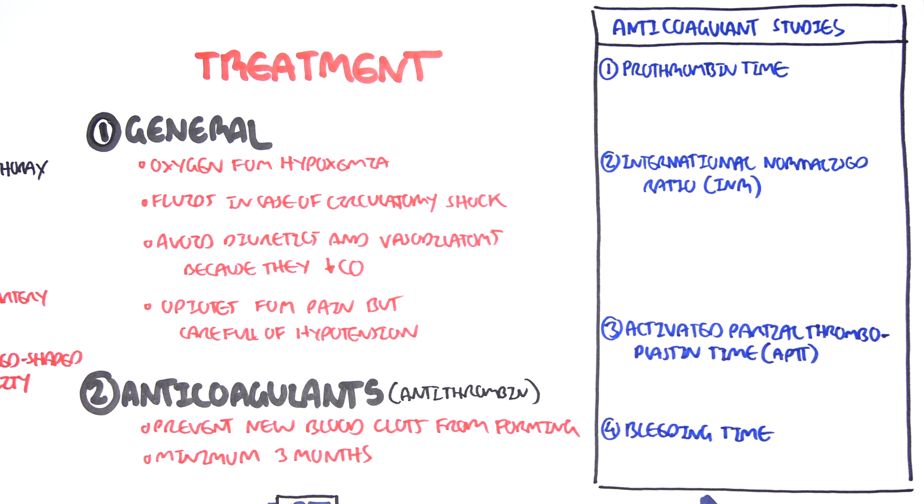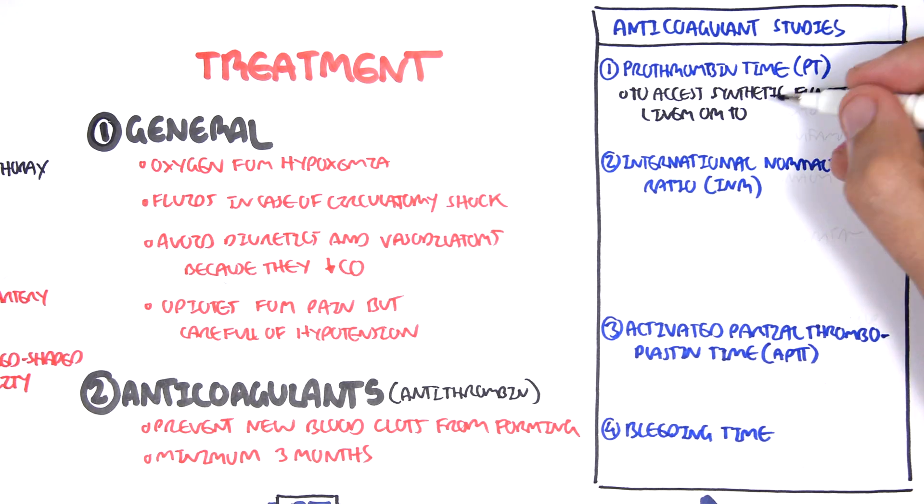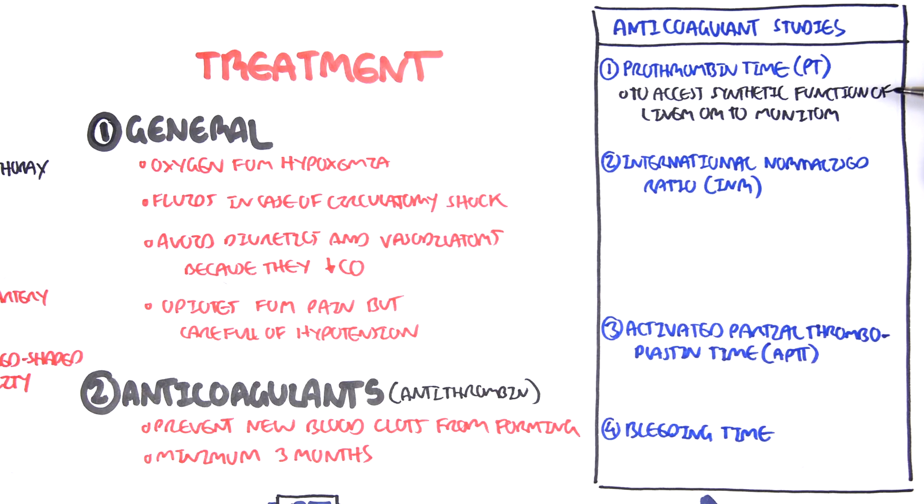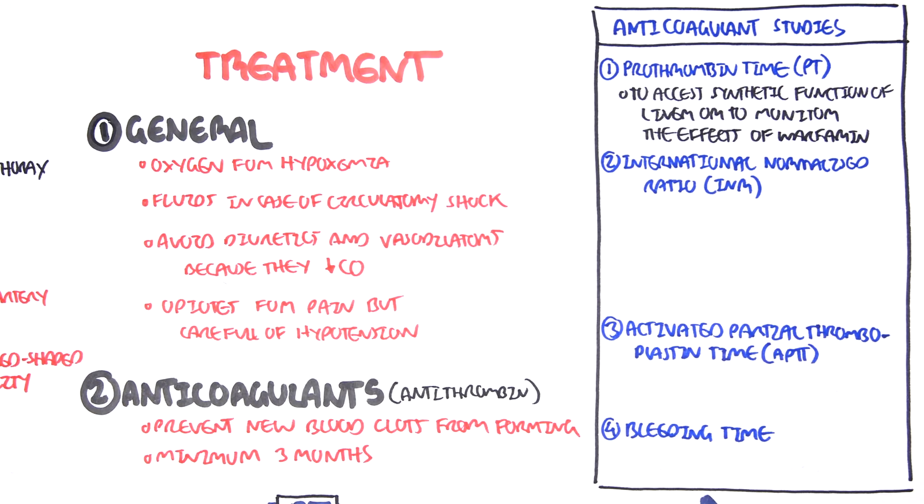Your prothrombin time, your PT, is measuring the activity of your clotting factors from the extrinsic pathway and your common pathway, which are the clotting factors produced by the liver. And so you're actually assessing the synthetic function of the liver. Or you can also use prothrombin time to monitor the effects of warfarin, because warfarin targets the extrinsic pathway and your common pathway as well.